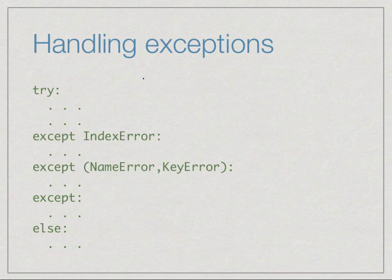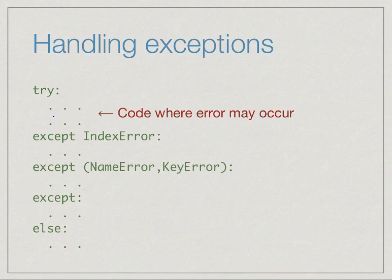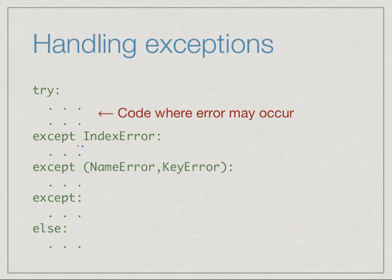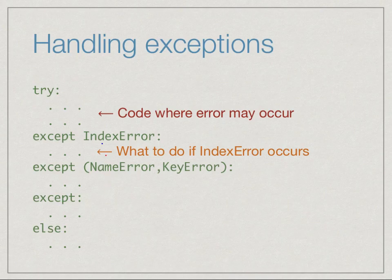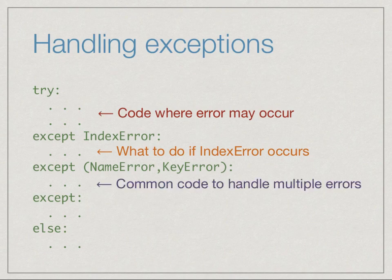This is done using a new type of block called try. When we have code in which we anticipate there may be some error, we put it inside a try block. We then provide contingencies for things that could go wrong using except statements — so it says 'try this, and if something goes wrong go to the appropriate except.' The first except might handle an IndexError; another except block might handle a NameError or KeyError together. You can have as many except blocks as there are types of errors you anticipate; it is not obligatory to handle every kind of error, only those which you anticipate.